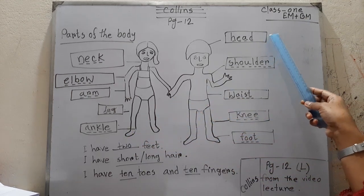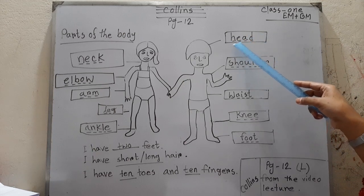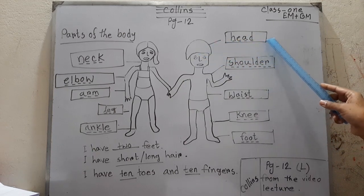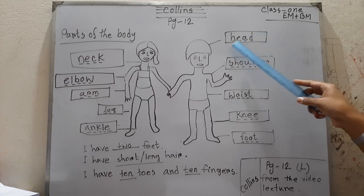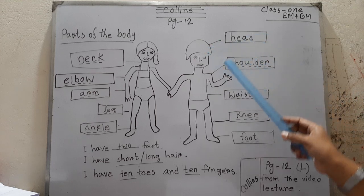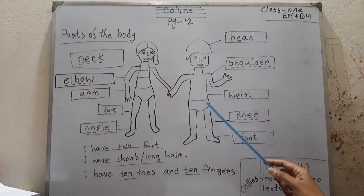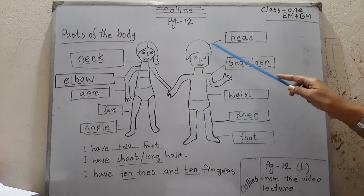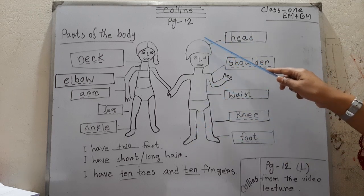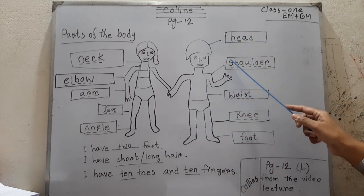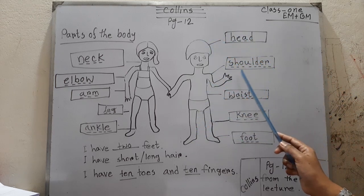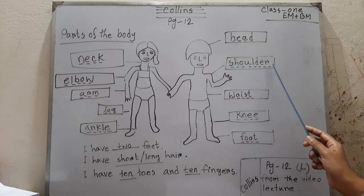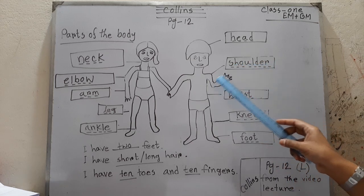This is the main part of the human body. Then: shoulder — shoulder means 'kandha', the upper part connecting the arm to the body.